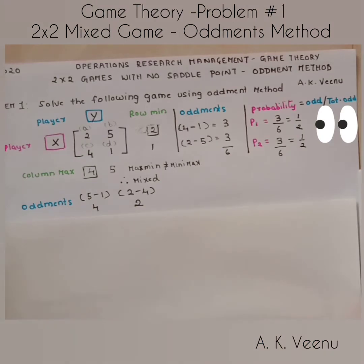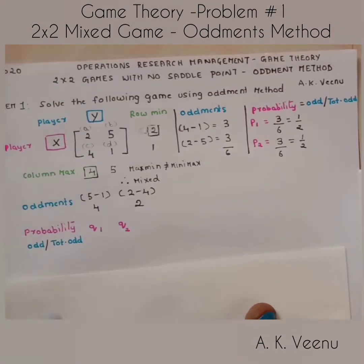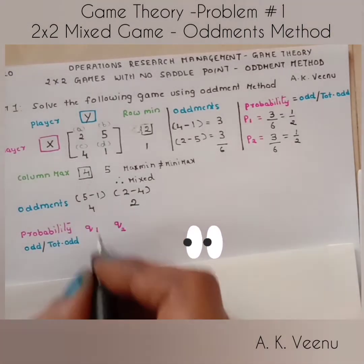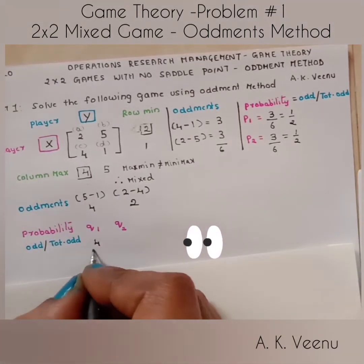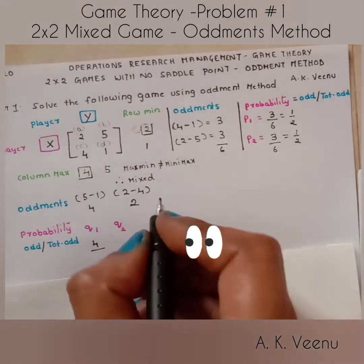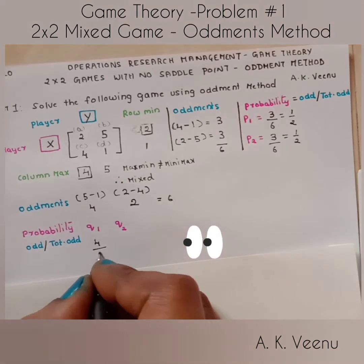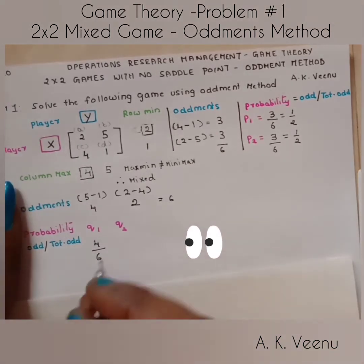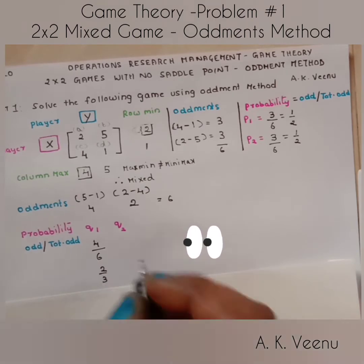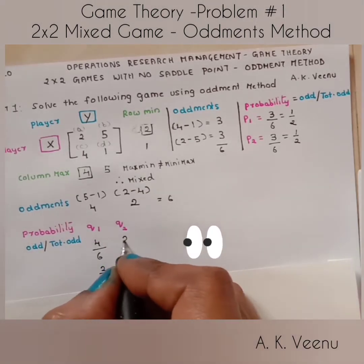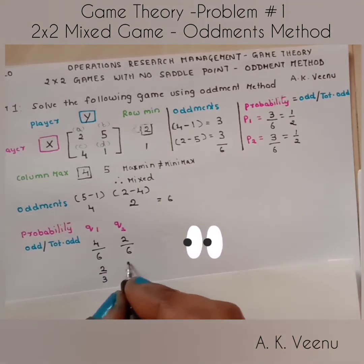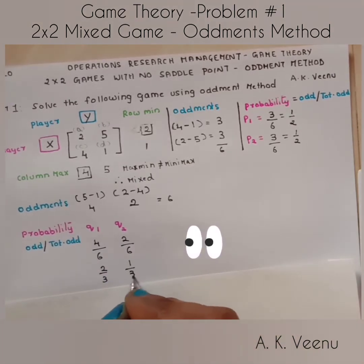Now let's find the probability of player Y. Q1: oddment 4 divided by total oddment 6 equals 2/3. Q2: oddment 2 divided by total oddment 6 equals 1/3.